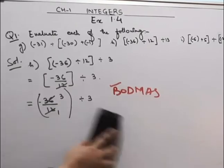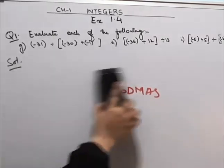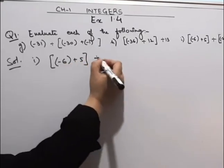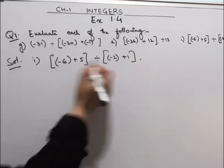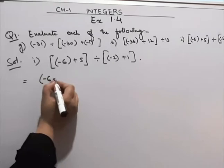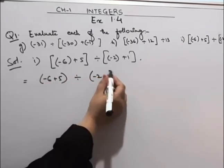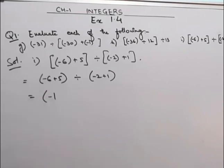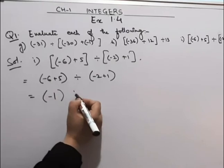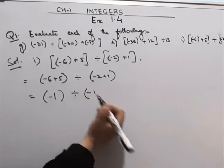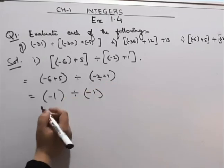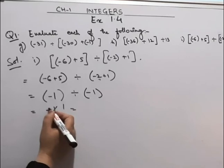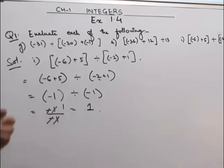Now coming to the I part. I part is minus 6 plus 5 divided by minus 2 plus 1. We'll solve both brackets first. Minus 6 plus 5 divided by minus 2 plus 1. 6 minus 5 will be 1, sign will be negative because 6 is greater and 6 has negative sign. Then divided by 2 minus 1 is 1, and we'll put this negative sign because 2 has greater value and it has negative sign. Now minus 1 divided by minus 1 will be 1, and minus will cancel with minus. So we'll get the answer as 1. The answer for the I part is 1.